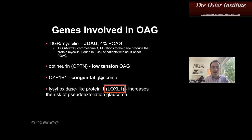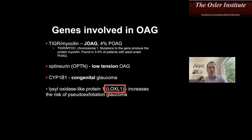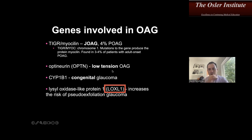I'll use some mnemonics to remember these. For optineurin in low-tension glaucoma: it's not a high-eye-pressure disease. The optic nerve is 'wimpy' — even normal pressure is noxious to it. So remember 'optineurin' = optic nerve. For CYP1B1, use alliteration: C and C — congenital and CYP1B1. That's the one responsible for congenital glaucoma.